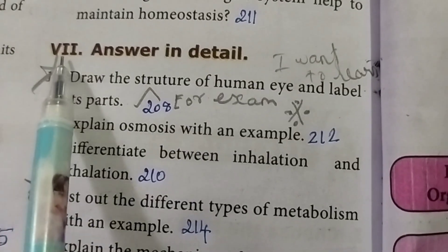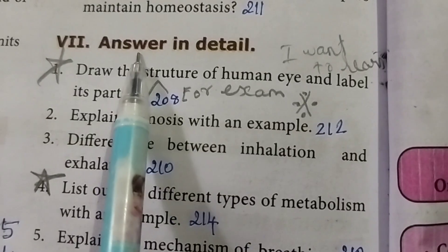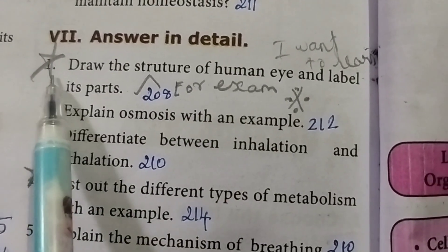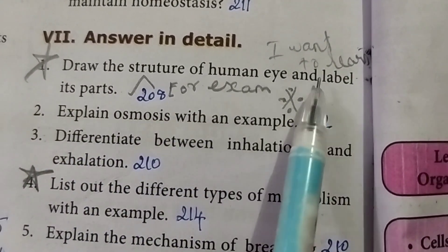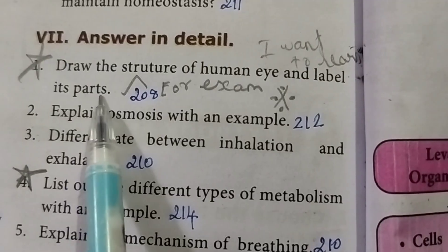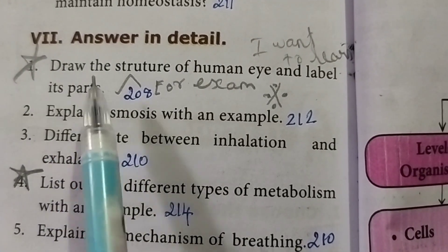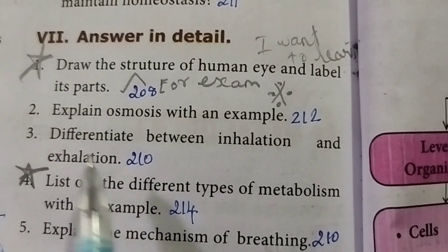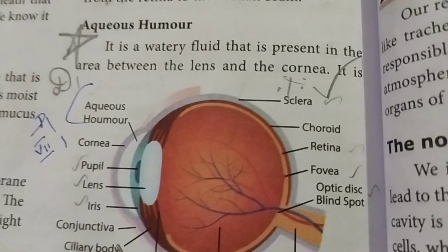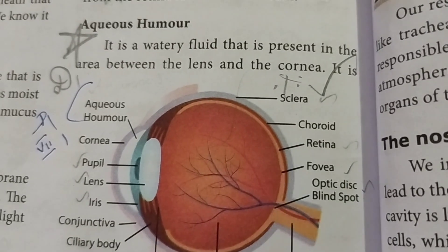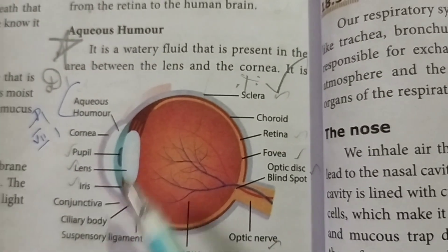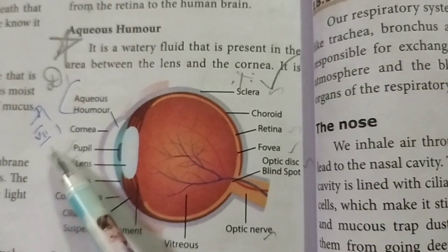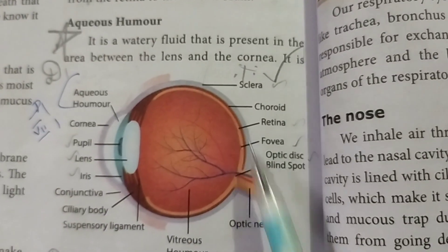Seventh Roman letter — answer in detail. First: draw the structure of the human eye and label its parts. This is an important question — page number 208. Draw the structure and label the parts.